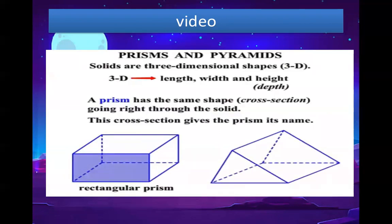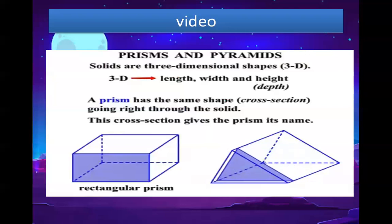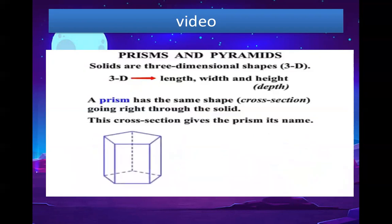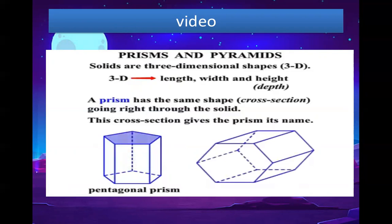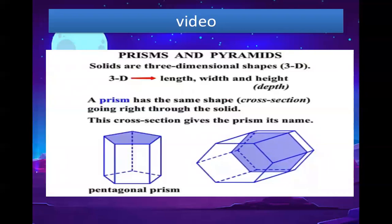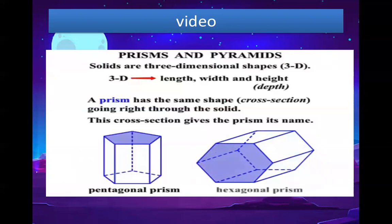Now what about this prism? This cross-sectional area also goes straight through the solid, so it's known as a triangular prism. This one — we need to look at the base. Five sides, that's a pentagon, and that pentagon goes straight through up and down through the solid, so this one is known as a pentagonal prism. What about this one here? Six sides — so it's a hexagon, and that area also goes right through the solid, so this is known as a hexagonal prism.